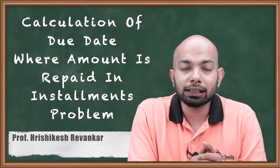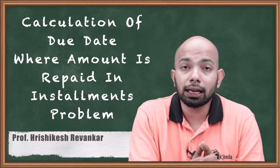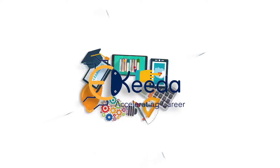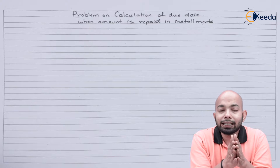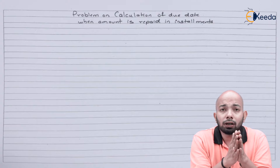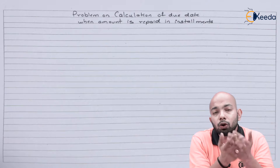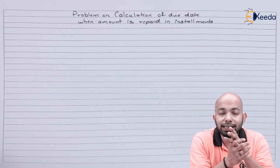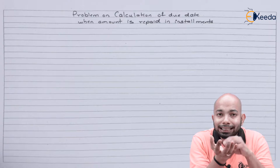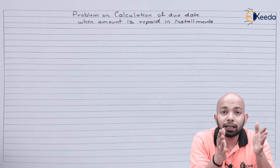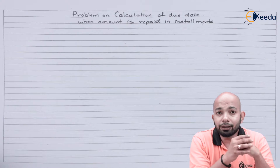We'll be discussing an illustration related to the concept of when an amount is repaid in installments and you have to calculate the average due date. The number of days from the loan sanction date until every installment paid has to be taken into consideration. The numerator will have the total number of such days and the denominator will have the number of installments paid, giving you the total number of days to add to the base date — the loan sanction date — yielding the average due date by when, if you pay off the amount, no interest will be charged.